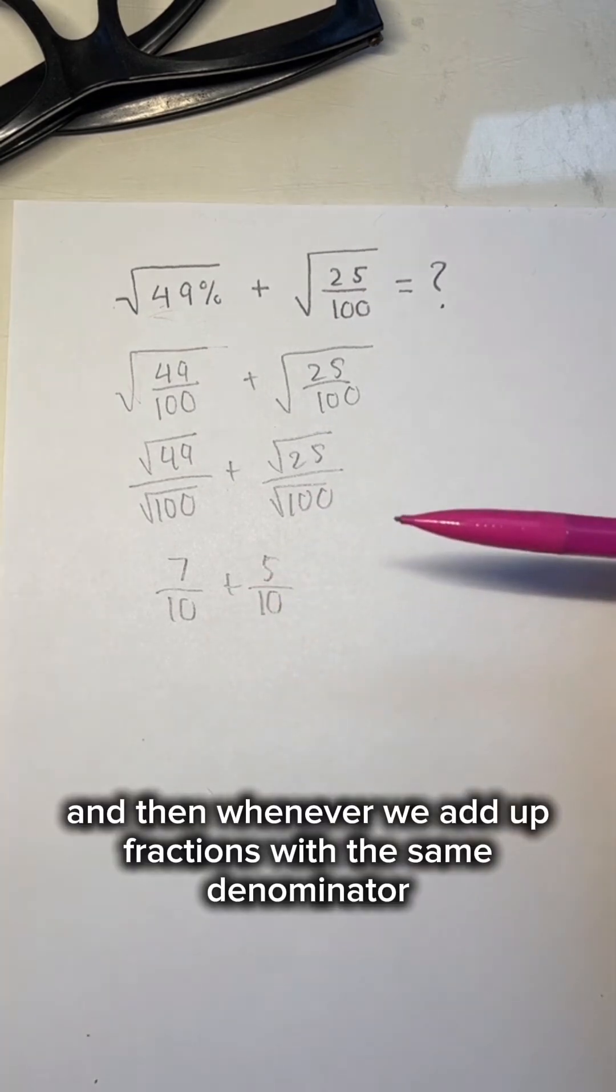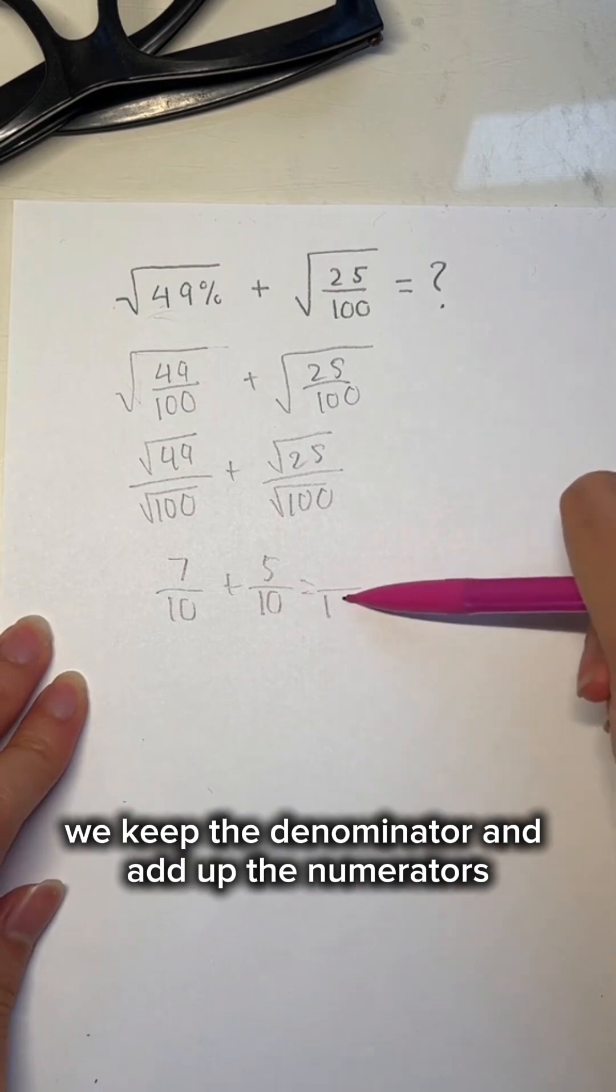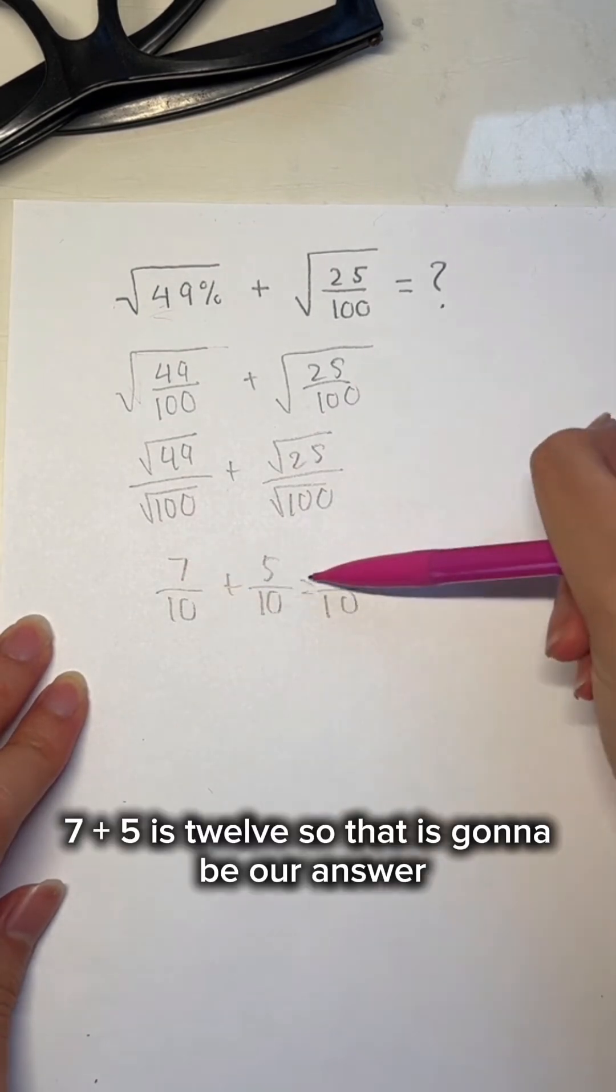And then whenever we add up fractions with the same denominator, we keep the denominator and add up the numerators. 7 plus 5 is 12.